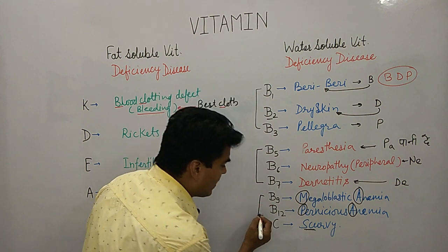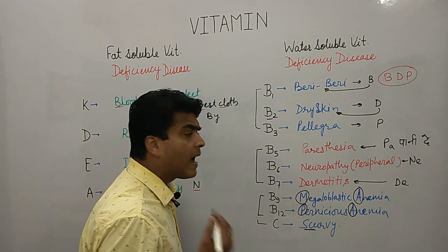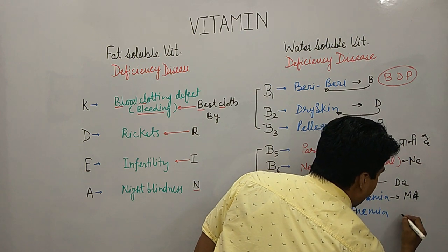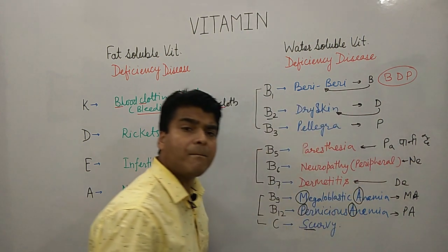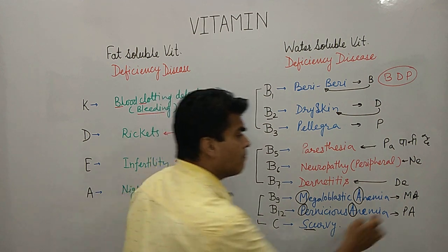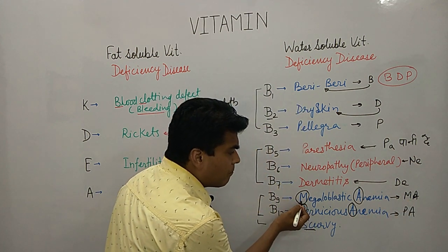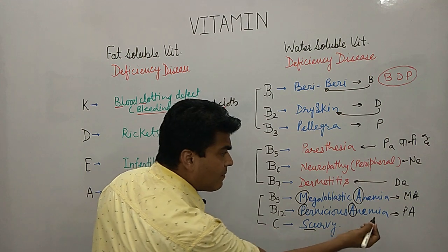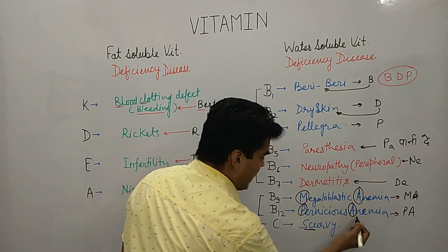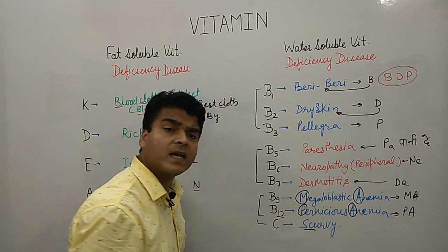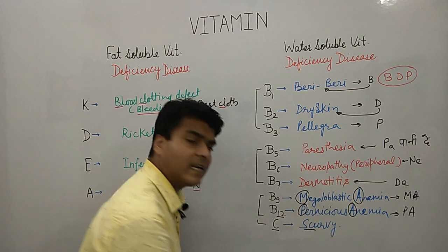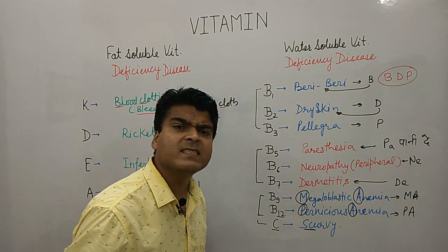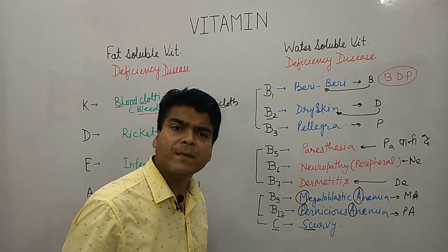For B9 and B12, remember 'Ma and Pa.' Ma stands for megaloblastic anemia, caused by Vitamin B9. Pa stands for pernicious anemia, caused by Vitamin B12. Finally, Vitamin C causes scurvy — both start with a similar 'S/C' sound, making it easy to remember.